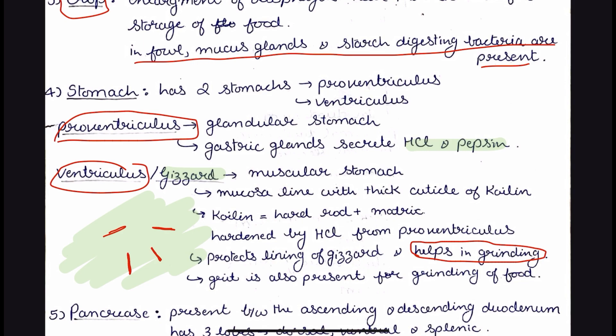The main function of coilin and the gizzard is to help in grinding of food. Sometimes grit is also present for the grinding of food. Grit basically means very small particles — they may be coilin, they may be rocks, or even feeders like oyster shell grit — and the function of the grit is to grind the food.